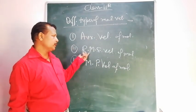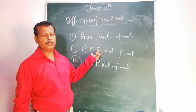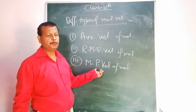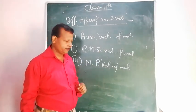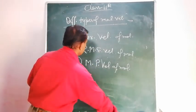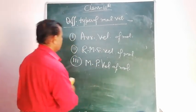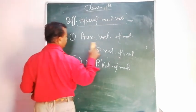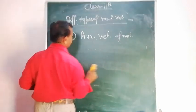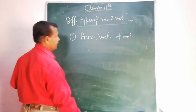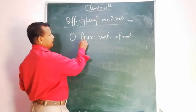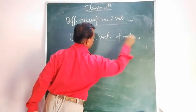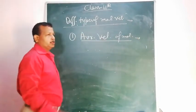Molecules show three types of velocity: average velocity, root mean square velocity, and most probable velocity. Now we will discuss them one by one. First one: average velocity of molecules.